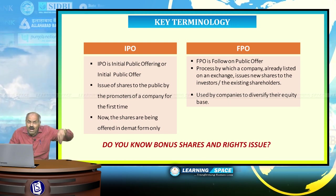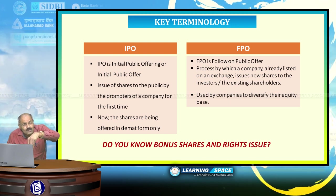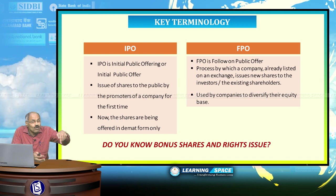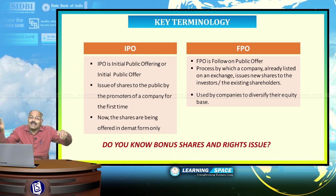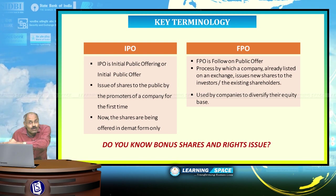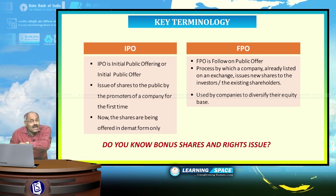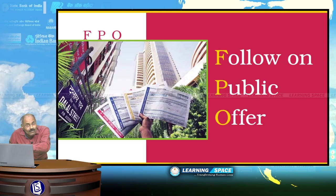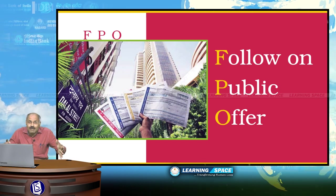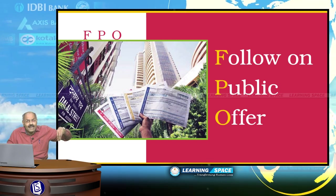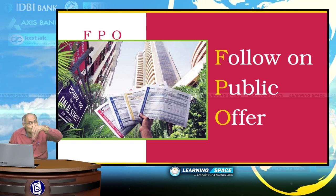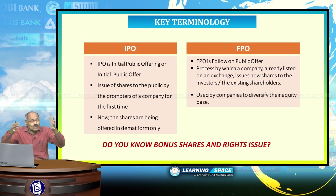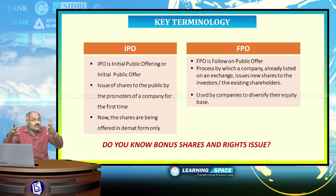FPO is Follow-on Public Offer. Initially, a company may have raised 3000 crores through an IPO and then wants to expand further by another 1000 crores. When, for the second time, they go for a public issue, that is called a Follow-on Public Offer. FPO is the process by which a company already listed on a stock exchange issues new shares to investors or existing shareholders. The difference between IPO and FPO should be very clear.